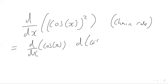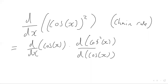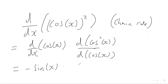So differentiating cos squared with respect to cos x: we start by differentiating cos with respect to x, which gives us minus sine x, because when we differentiate cos we get negative sine. And when we differentiate the squared function with respect to the variable, we just get two times the variable — so two times cos x.